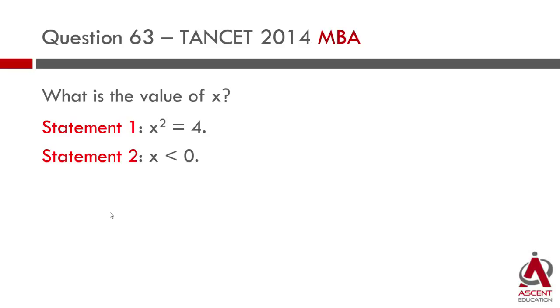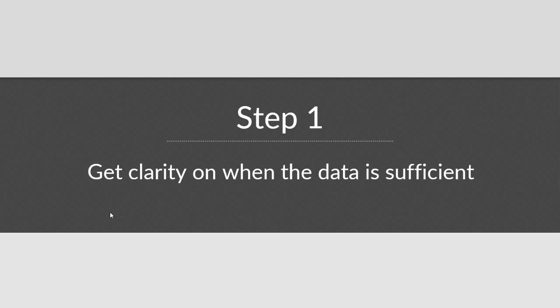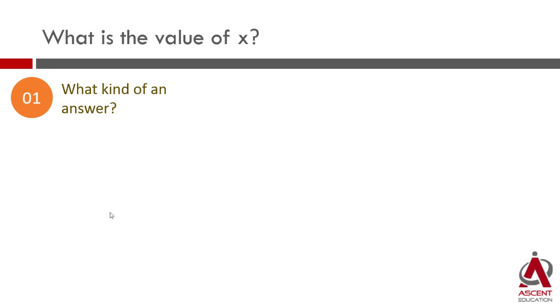For the question 'what is the value of x', you should be able to come up with one unique value for x. If you say x is equal to 3, then we are not coming up with a unique answer. The data is sufficient if I am able to find one unique value for the value of x. If I am able to come up with a unique value for x, then the data is sufficient. So we got clarity on this.